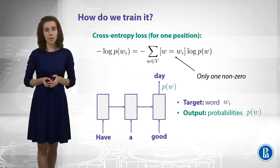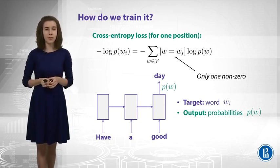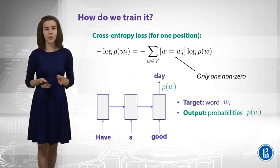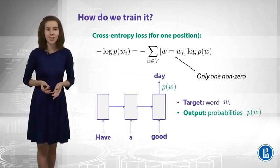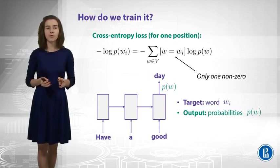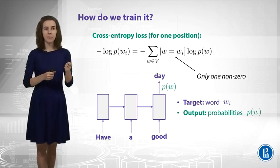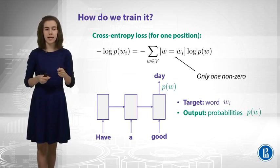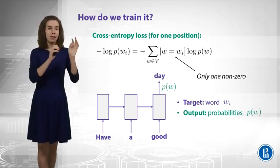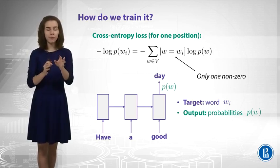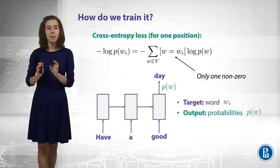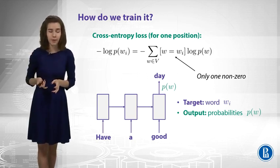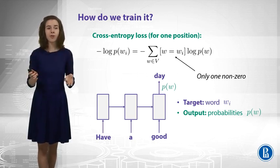Cross-entropy loss is probably one of the most commonly used losses for classification. Maybe you have seen it for the case of two classes, where you have labels like zero and ones, and you have the label multiplied by some logarithm plus one minus the label multiplied by some other logarithm. Here, this is just the general case for many classes.